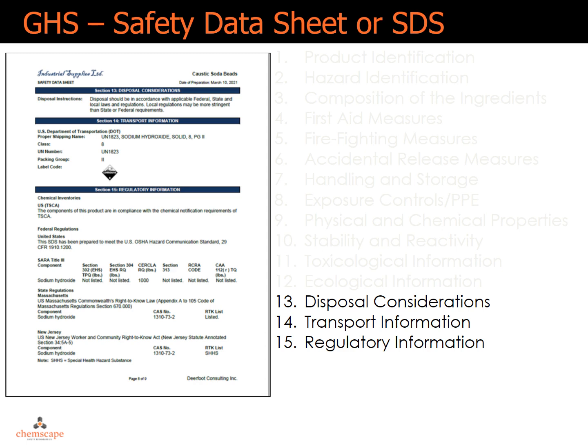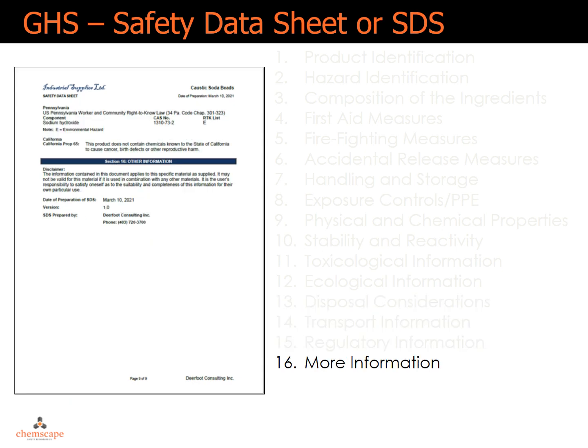Section 13 lists disposal considerations for the hazardous product. Section 14, transport information. Section 15, regulatory information. Section 16 is the final section of the SDS, called more information, and lists details like who authored the SDS and date of preparation.